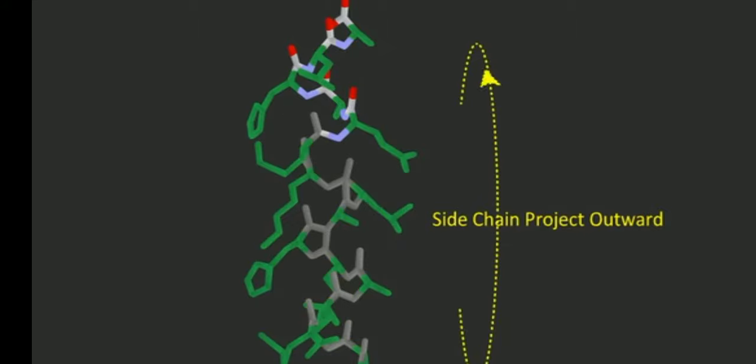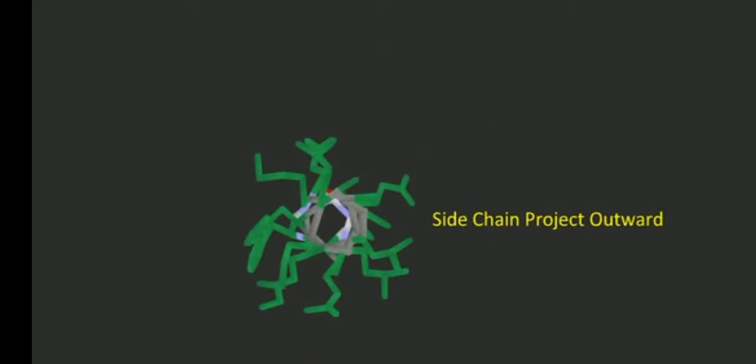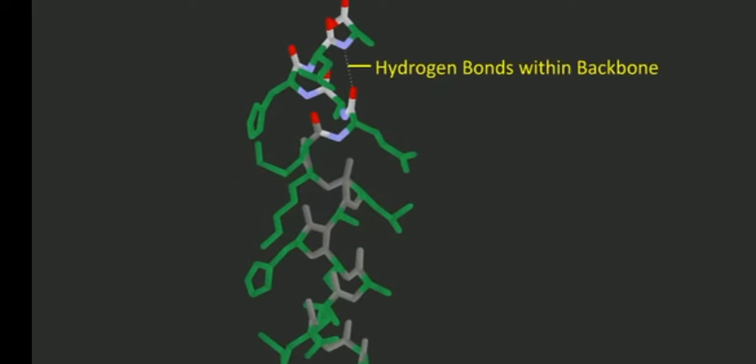This hydrogen bonding within the same chain causes the peptide chains to coil up into a spiral structure as shown in the animation.